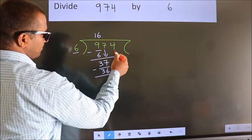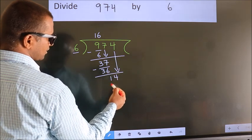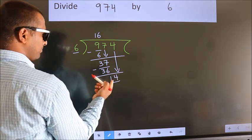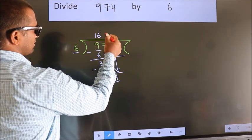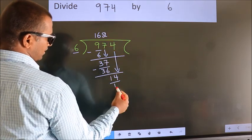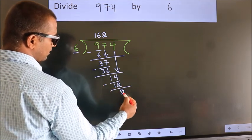After this, bring down the beside number. So 4 down. So 14. A number close to 14 in 6 table is 6 2 12. Now we subtract. We get 2.